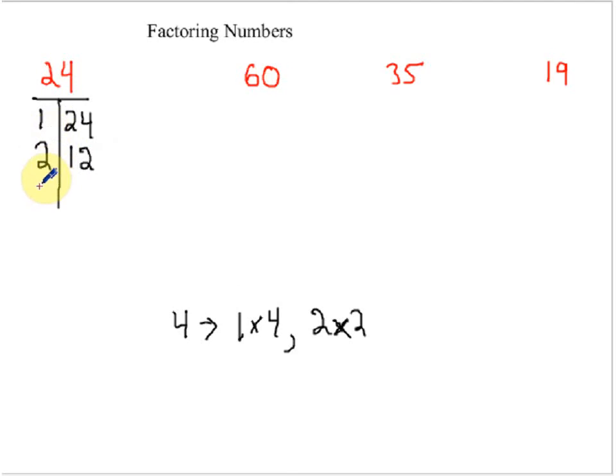And then I keep counting up. I go to three, and three goes into 24 because three times eight works. And I find my pair of three times eight equals 24. And extend my T, count up to four, and four goes into 24. Four times six equals 24. And count up to five. Five does not go into 24. Count up to six. Well, six is already in my chart. I've found a six as a pair with four, so that means I am done.